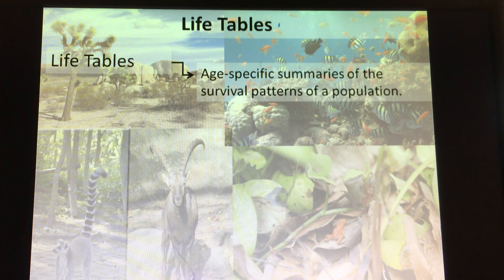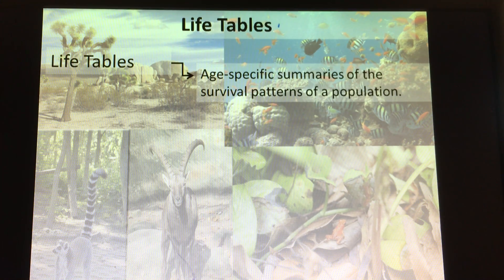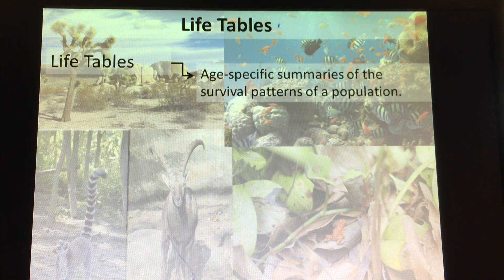A life table provides age-specific summaries of the survival patterns of a population. For example, sea turtles lay thousands and thousands of eggs, but very, very few actually grow up and survive long enough to become adults. So in age-specific summaries, there would be so many tiny babies, but after a year or two, rapid death — the per capita death rate would be high. With humans, we have lots of babies being born, and many actually live until adulthood. So we could look at how many zero to five year olds there are in a population, five to ten year olds, and see the survival of that species.